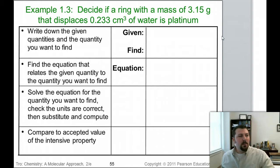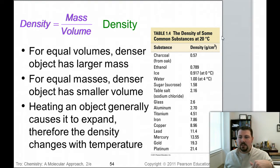Here's an example. Decide if a ring with a mass of 3.15 grams that displaces .233 cubic centimeters of water is platinum. What I'm saying is I have something in front of me that is a ring, and I want to know if that ring is made out of platinum. How am I going to do it? I remember that platinum has a particular density. That's an intensive property of platinum. It has a certain number. You'll remember from the table that we just saw, each of these different materials have different densities. Notice platinum at the bottom, 21.4. If I could find the density of this ring, and it is 21.4, I'll know I have platinum. That's the idea.